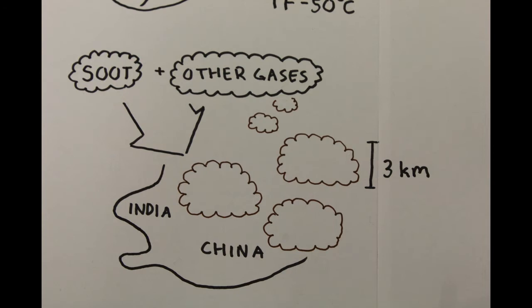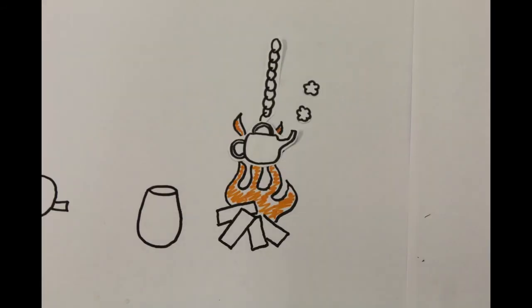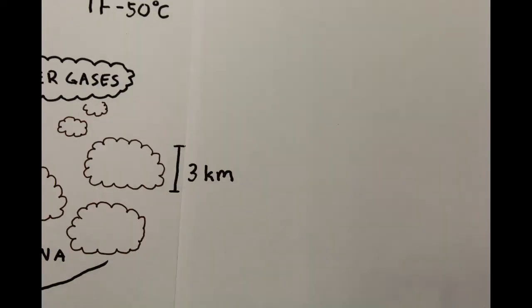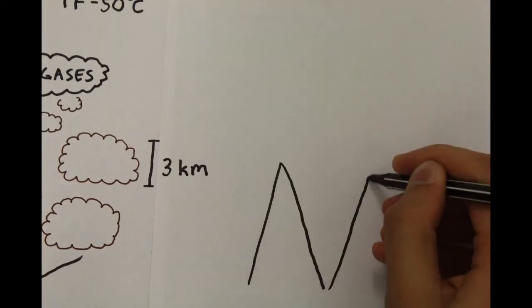And the reason for why the brown clouds exist is probably, as we stated before, the extensive use of biofuels for cooking. One major component of the brown clouds is black carbon, which is another name for soot.